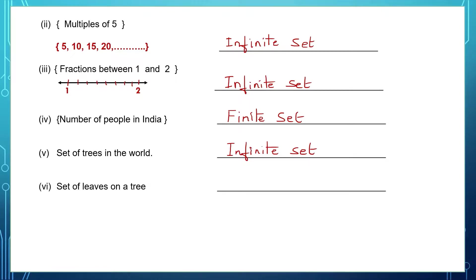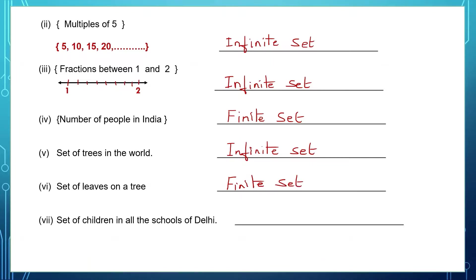Set of leaves on a tree. At any point in time, if you count the number of leaves on a tree, it is possible to count. So that is a finite set. Set of children in all the schools of Delhi can be counted, so that is also a finite set.